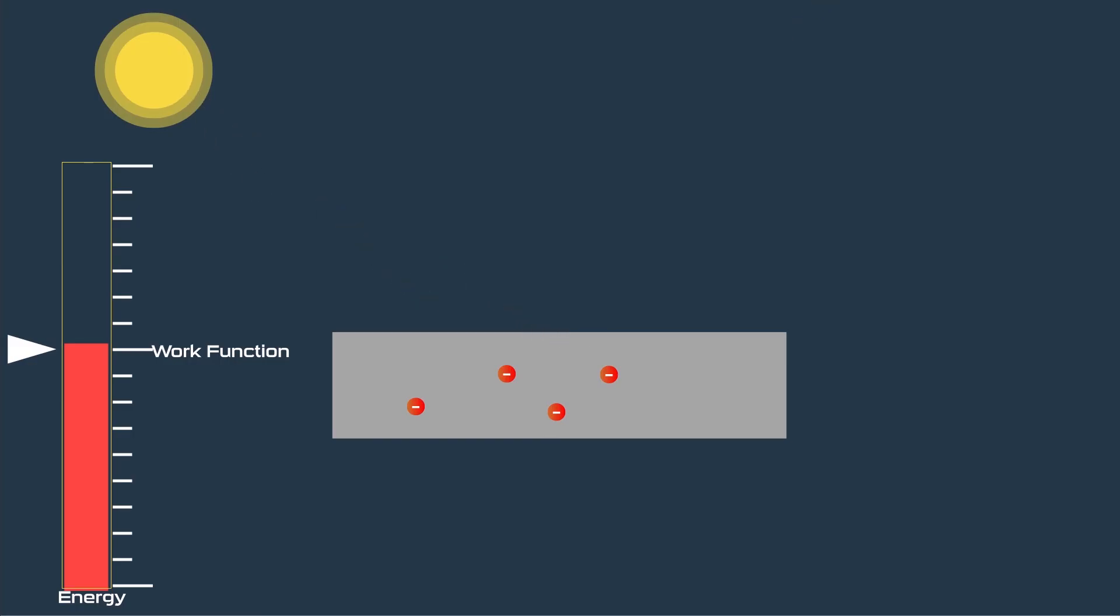If energy of photon is exactly equal to the work function, then the electrons absorb that energy and only come out to the metal surface. But if the energy of photon is more than the work function, then electron spends some part of the entire energy reaching to the surface and the rest of the remaining energy is converted into kinetic energy.